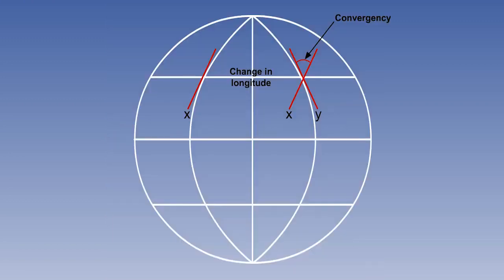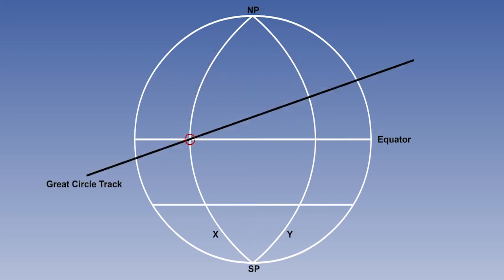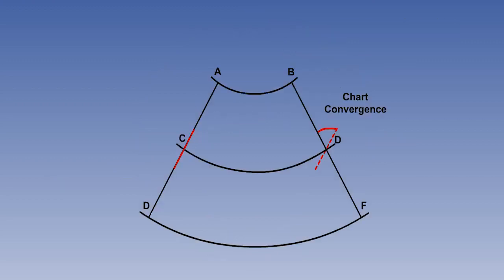We are now going to look at the difference between Earth convergence and chart convergence. Earth convergence, otherwise known as convergency, is the difference in the inclination between two different meridians on the Earth, or the change in a great circle track between two meridians on the Earth. Chart convergence is the difference in the inclination between two meridians on the chart, or the change in a straight line track between two meridians on the chart.